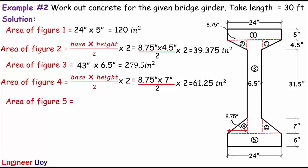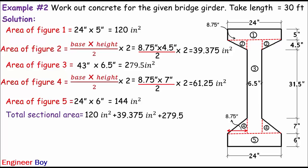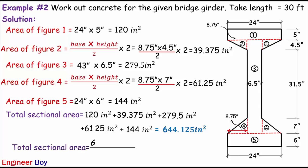Area figure five is its base of 24 inches times its thickness or height of 6 inches, so 24 times 6 gives 144 square inches. Adding all five segment areas, we get the total sectional area equals 644.125 square inches. We can also convert this value into square feet by dividing by 12 two times, giving a sectional area of 4.473 square feet.